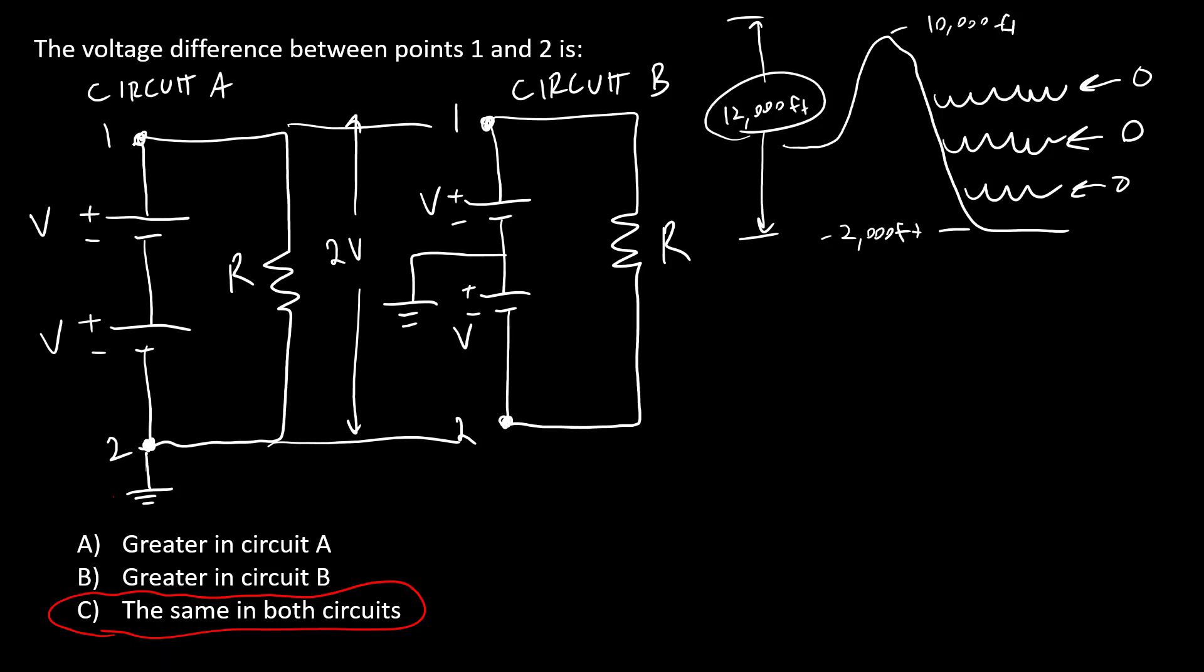Here I'm defining that point as zero volts, which means this point is going to be V and this point is going to be 2V referenced to ground.